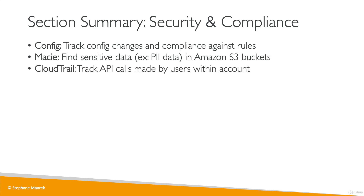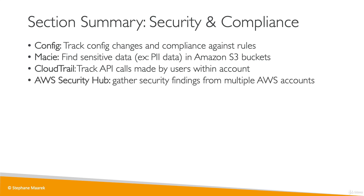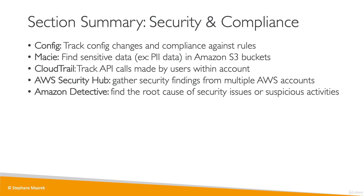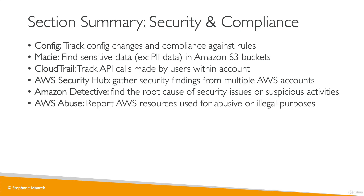CloudTrail is a way for us to track API calls made by users within the accounts. Security Hub is a way for us to gather all the security findings from many different services across multiple AWS accounts into one place and act on these security findings directly from there. Detective is for when we have a security finding — how do we get to the root cause very quickly? This is with Detective, which links up all these services together and helps you with that.